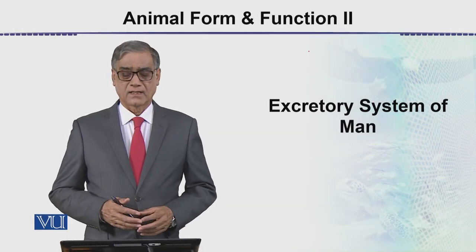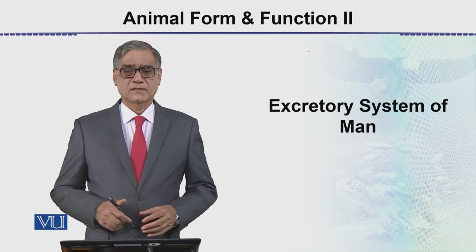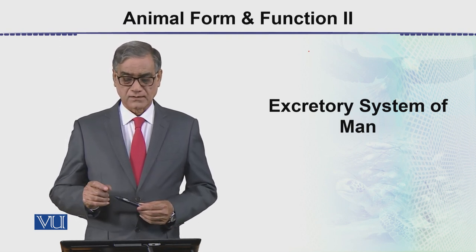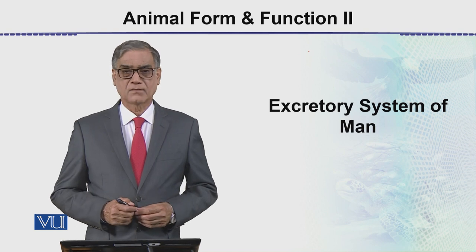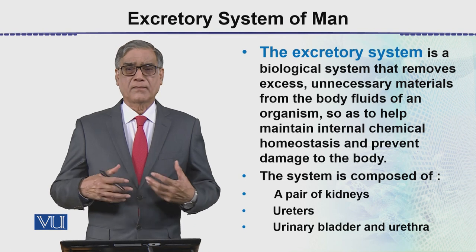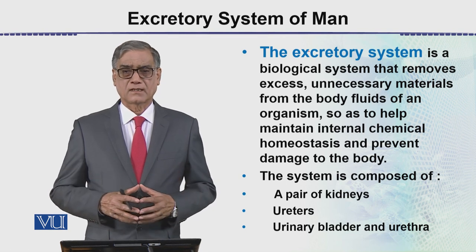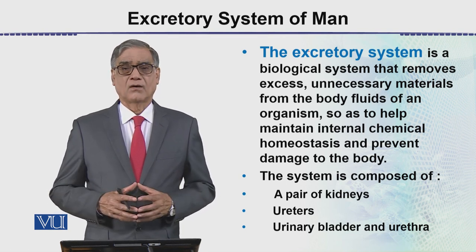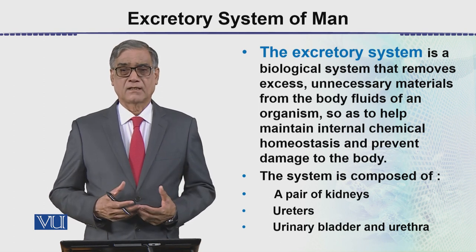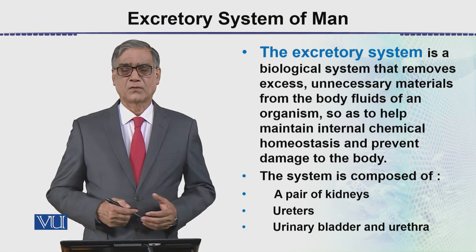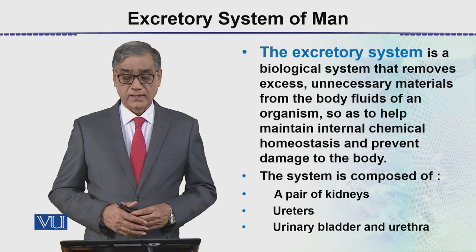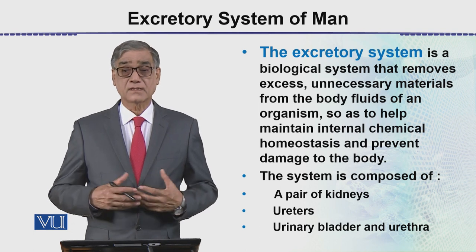In Animal Form and Function 2, we are studying excretory systems. This is the excretory system of man. In this excretory system, we will be studying about the kidneys and their micro and macro anatomy and functions. These modules will be studied one by one. In this module, we are going to study the excretory system.